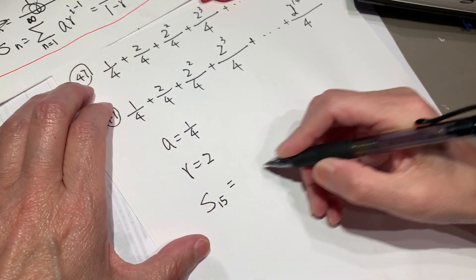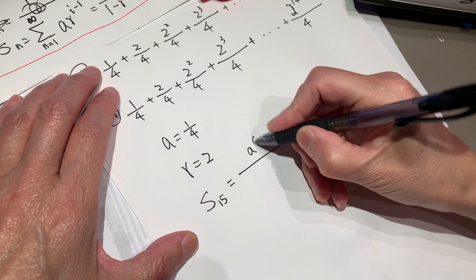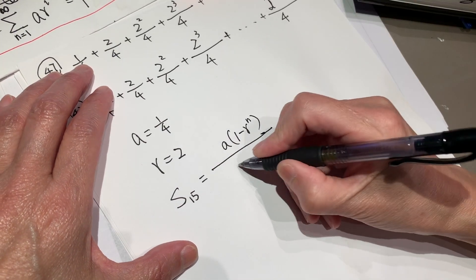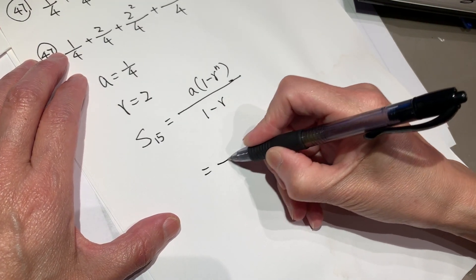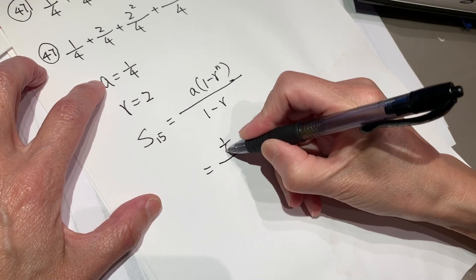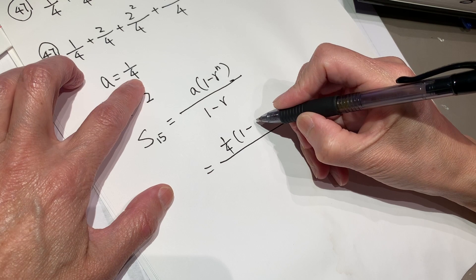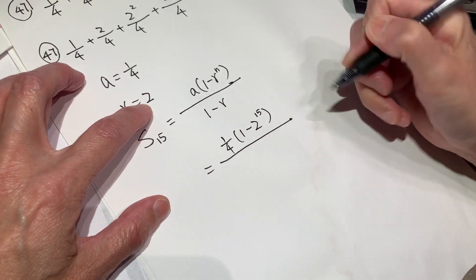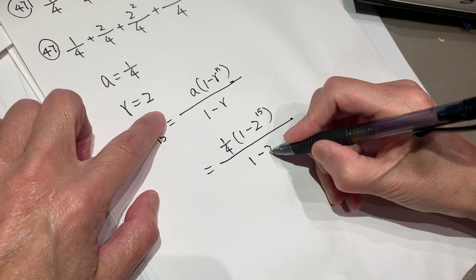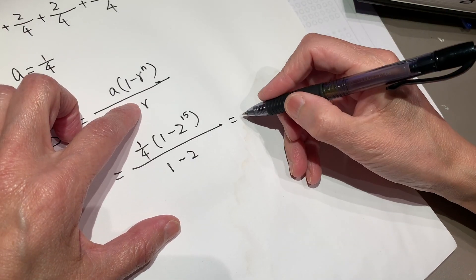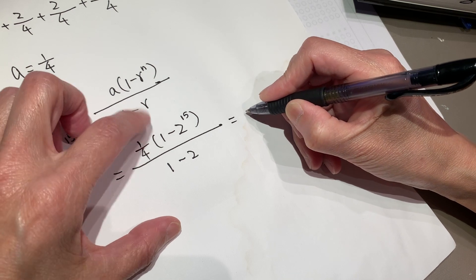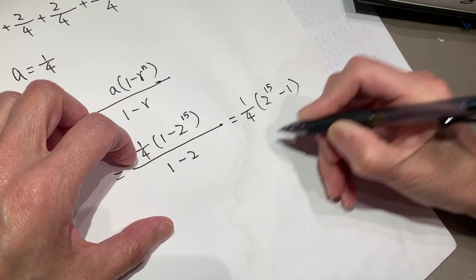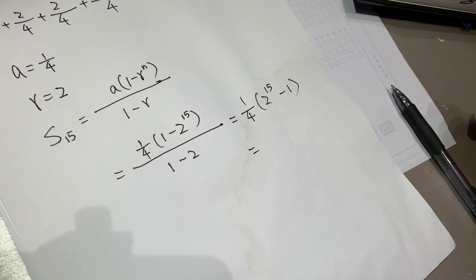S_15 equals a times 1 minus r to the power of n, over 1 minus r. A is a quarter, 1 minus 2 to the power of 15, over 1 minus 2. So this equals one quarter times 2 to the power of 15 minus 1.